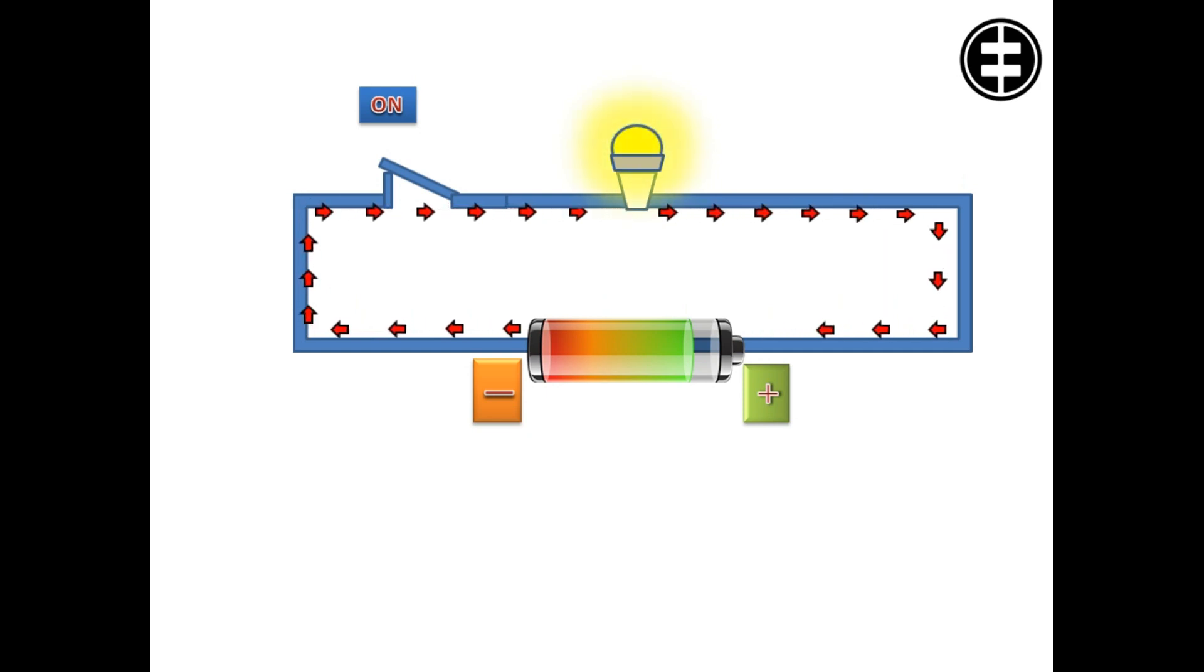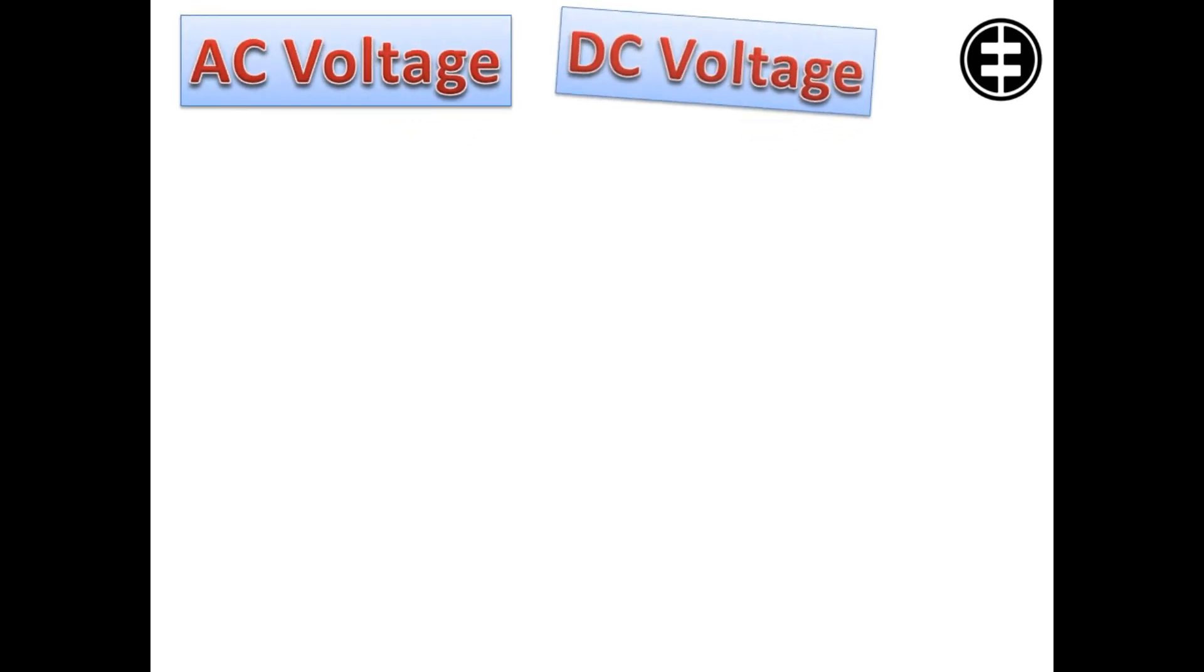Current reaches the light, causing it to glow. Current returns to the power source. Voltage is either alternating current voltage or direct current voltage. Ways they differ.